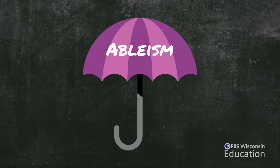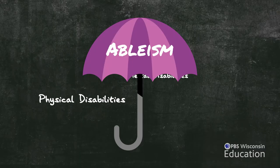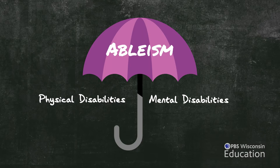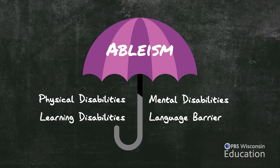A lot of these biases can be directed toward physical disabilities, but also mental disabilities, learning disabilities, or even something like a language barrier. It's really easy in school to segregate students based on ability levels, even if you're trying not to.